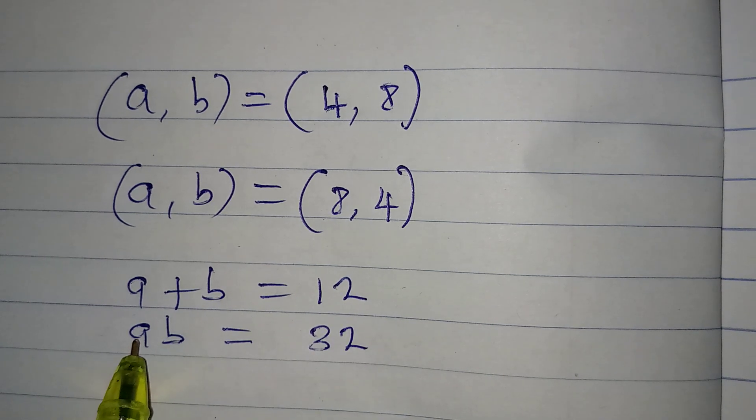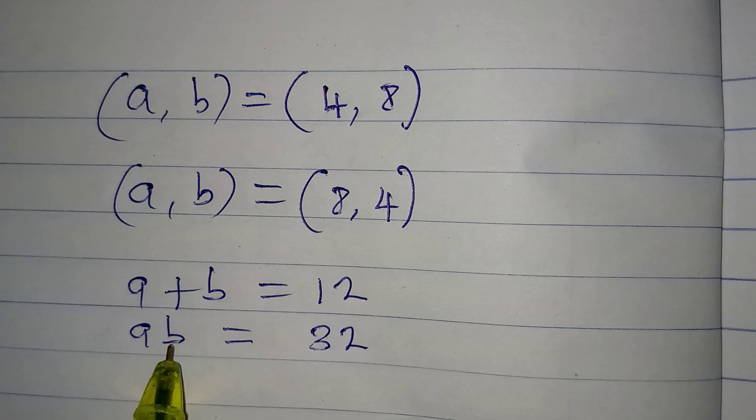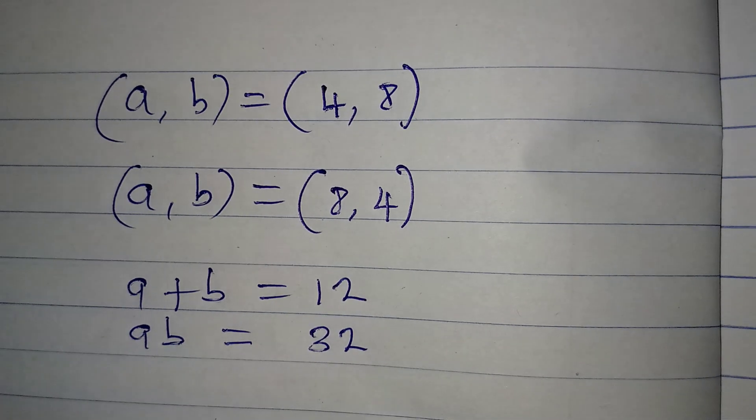Then A is still 4, 4 times B, which is 8. 4 times 8 will give us 32. That is perfect.